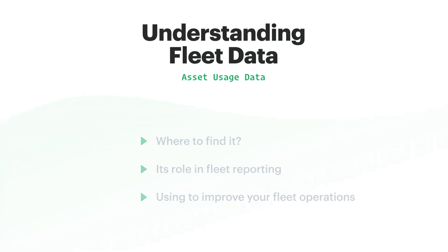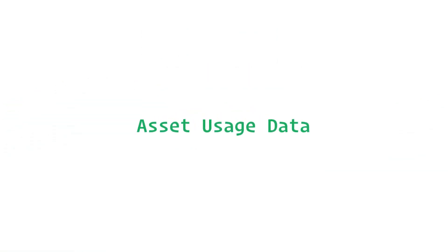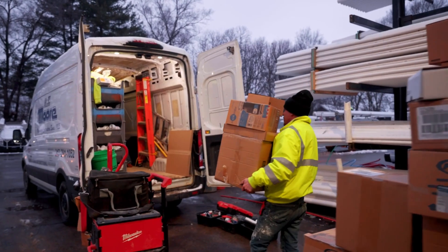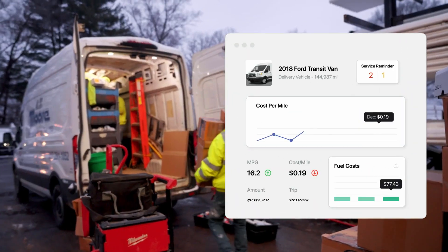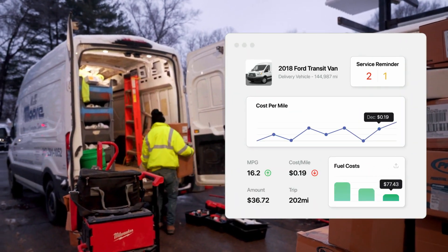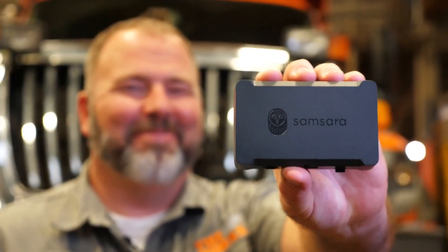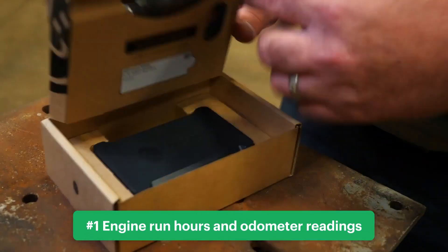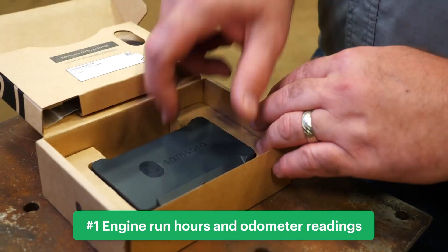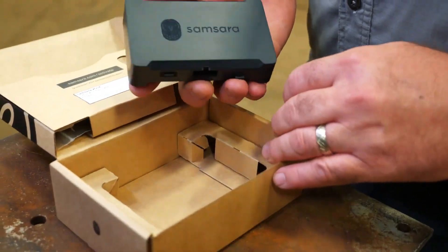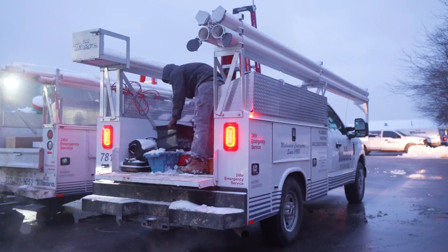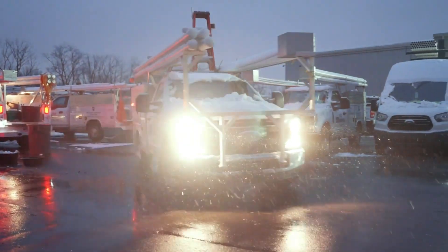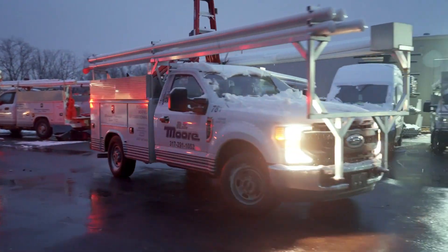So where do you find asset usage data? Let's start with telematics data. Telematics devices take in a lot of vehicle data and there are a few key points you can use to assess utilization. The first point to look at is engine run hours and odometer readings, which are the easiest metrics to collect and use to assess how much time your assets' engines are running as well as how far they're traveling day-to-day.